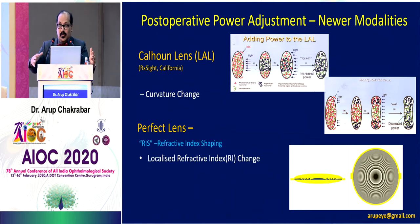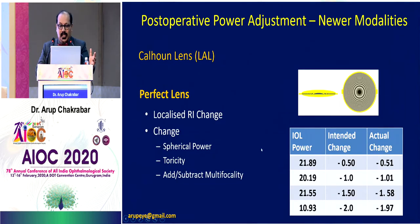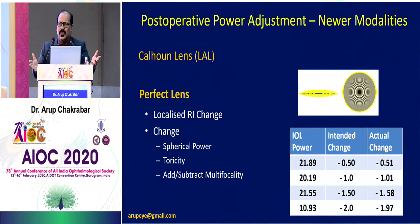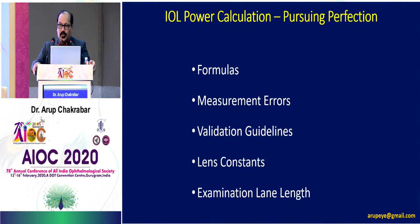Another technology that is coming up but not yet humanized is a femtolaser platform-based technology from a company called Perfect Lens — refractive lens index shaping. Using femtolaser light, refractive index changes are brought about within the substance of the lens. You can add or subtract spherical power, add or remove toricity, or even add or subtract multifocal qualities. However, even when these things become reality, they may not be critical in day-to-day practice because they are technology-based solutions that cost money and require repeated patient visits. So IOL power calculations still play a very important role.